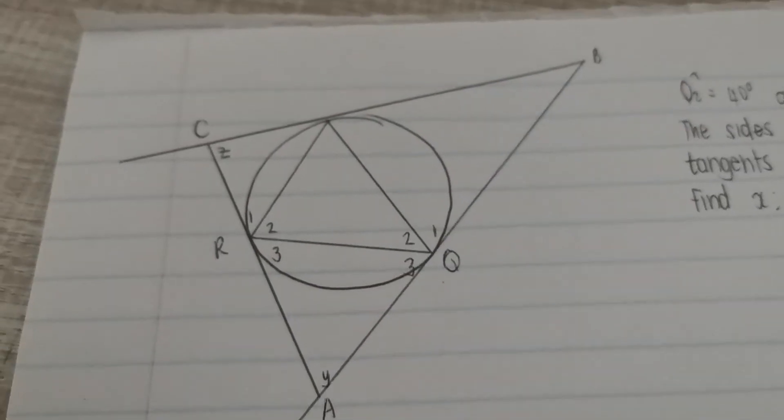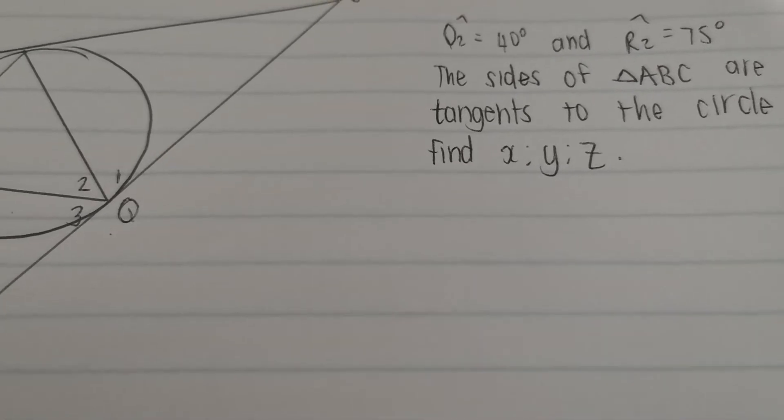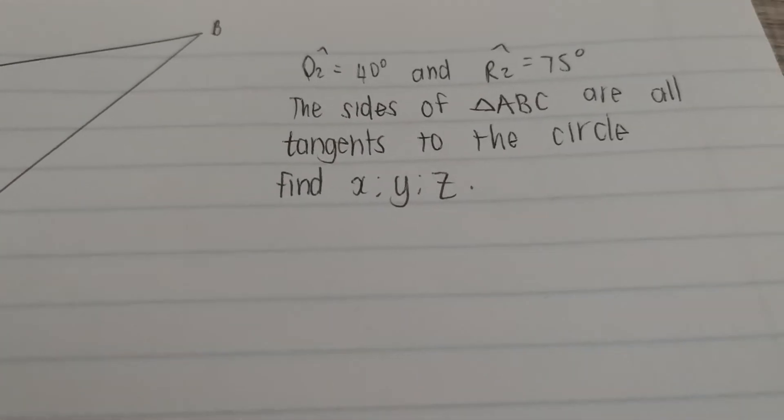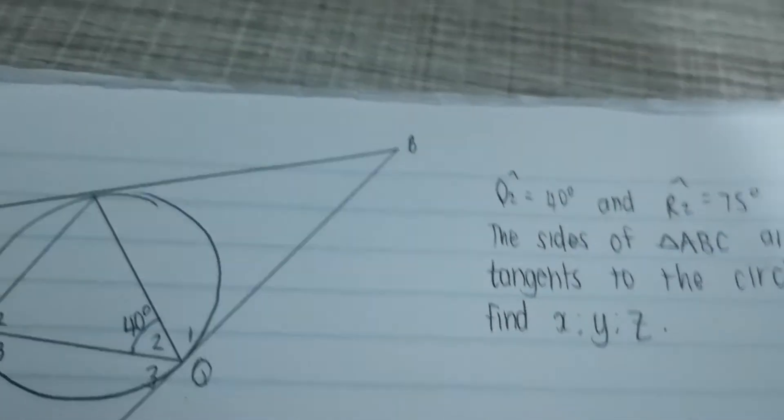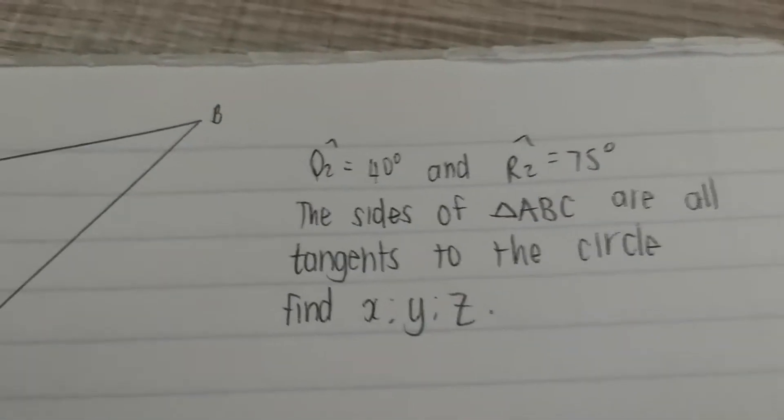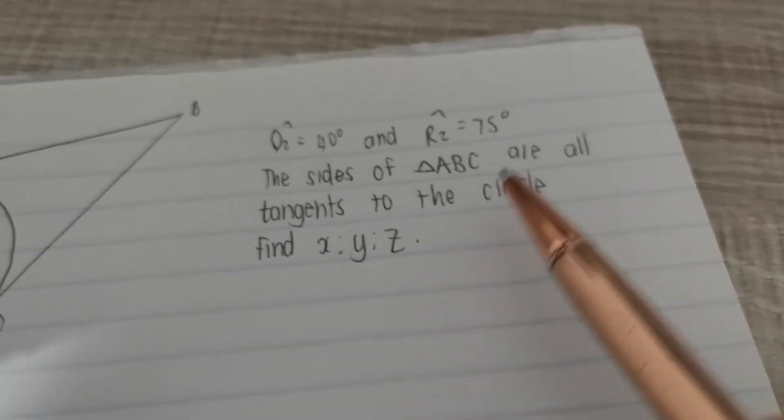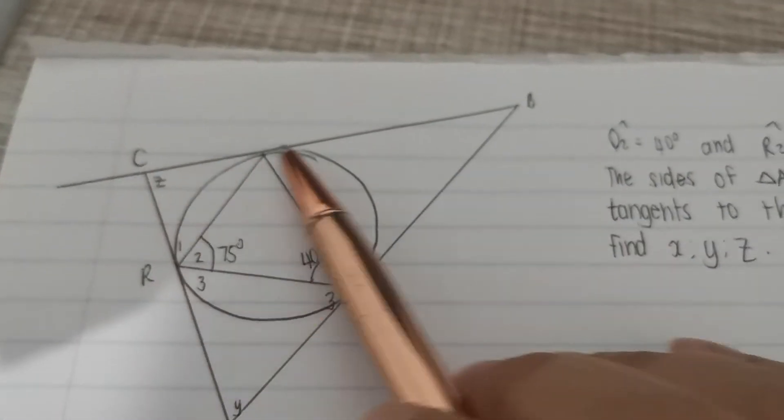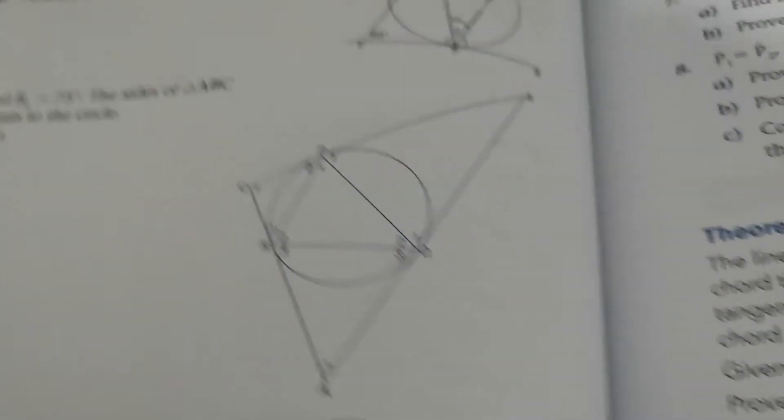Moving on, I have a question here. This is the diagram. We have information. Another tip, we do not give you any information unless we actually want you to read it. So this information here says Q2 is equal to 40 degrees, so this one over here, and when you read the information, you go fill it in onto the diagram. So this angle over here is 40 degrees. It says R2 is 75 degrees, R2 over here, this one here, 75 degrees, and it says that the sides of triangle ABC are all tangents to the circle, meaning that they all touch in the circle only at one place.